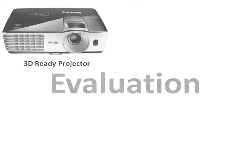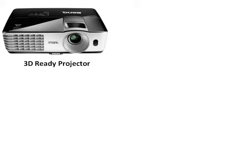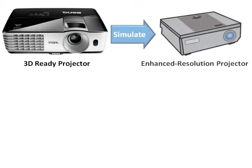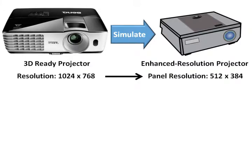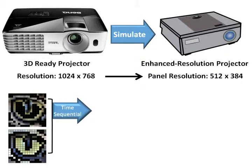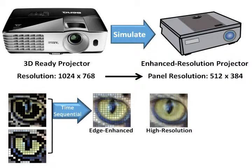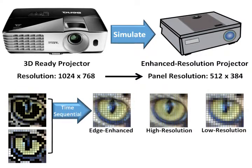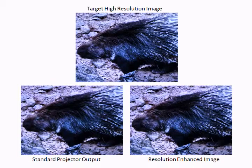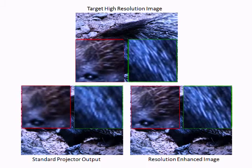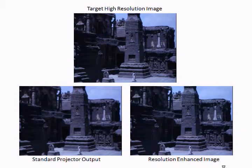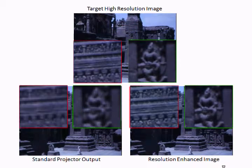To evaluate our design in a physical setup, we use an unmodified 3D-ready projector with a 120Hz refresh rate. We use this projector to simulate an enhanced resolution projector that uses light modulator panels with half the native resolution of this projector in each direction. We sequentially project the edge and non-edge images to create the edge-enhanced image. We also project the true high-resolution and a low-resolution image. These are then captured with an SLR camera with appropriate exposures for comparison. The comparison of these results shows that our method provides a considerably closer match to the image at the original resolution.